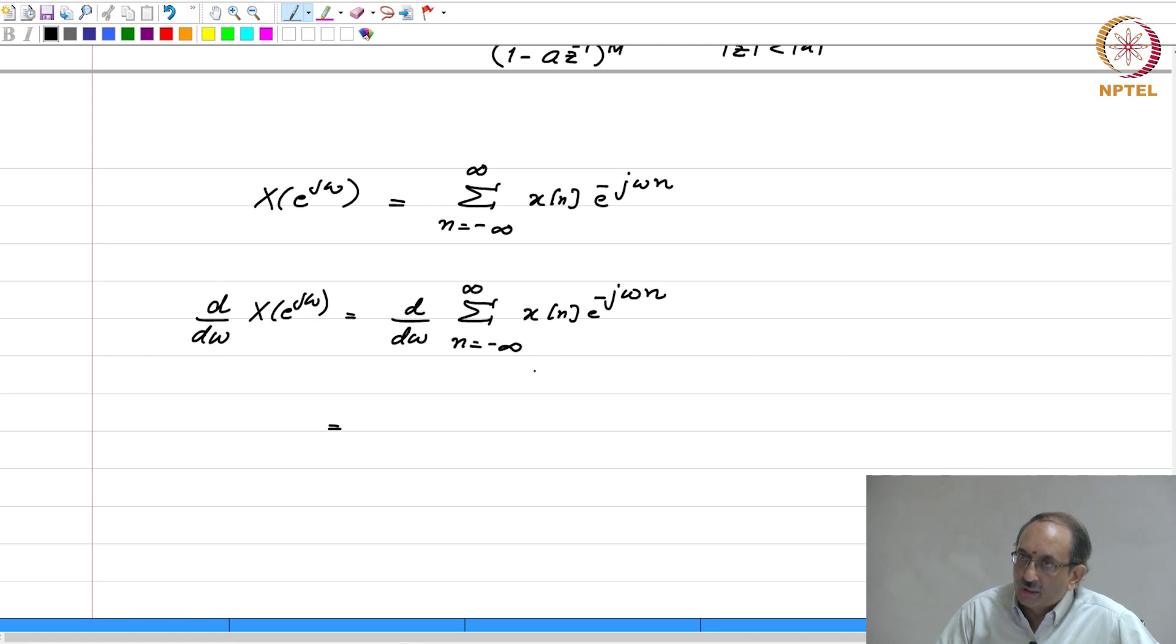Now, how about taking d by d omega inside? Is that ok? Or earlier we did this, right? So, can we repeat what we did earlier? If the ROC contains the unit circle, then it is absolutely convergent there and then you can. So, you in DTFT you do assume absolute convergence? So, that is what I am saying. Once you say the DTFT exists, you are saying the sequence is absolutely summable, right.